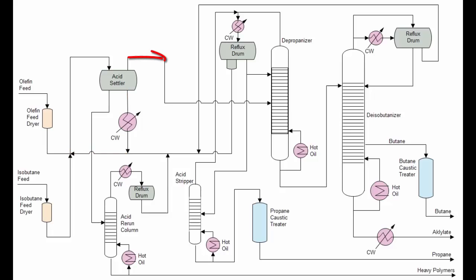On the other hand, the lighter phase contains the reaction products and any unreacted isobutene. A slipstream of hot acid is sent to the acid rerun column to remove dissolved water and longer chain polymerized hydrocarbons that tend to build up in the system.